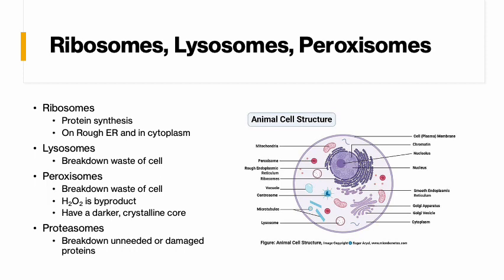Peroxisomes are a version of lysosomes that break down things like free radicals and toxins, but they produce peroxide as a byproduct, which is why they're called peroxisomes. A peroxisome has a darker, crystalline center than a lysosome when looking at a picture. Proteasomes are also similar, but their function is to break down unneeded or damaged proteins. When proteins become damaged and no longer work, they're called denatured, and proteasomes break down denatured or extra proteins the cell does not need.